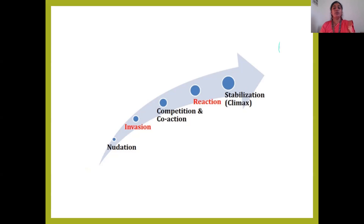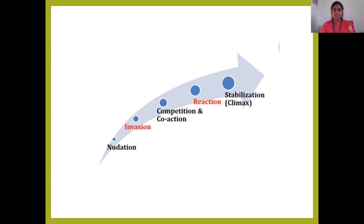Now when you have two different groups of organisms — group A and group B — in a particular area, there exists a competition and a co-action between them. For the limited supply of nutrients present in that area, there arises a fight, a competition between A and B.